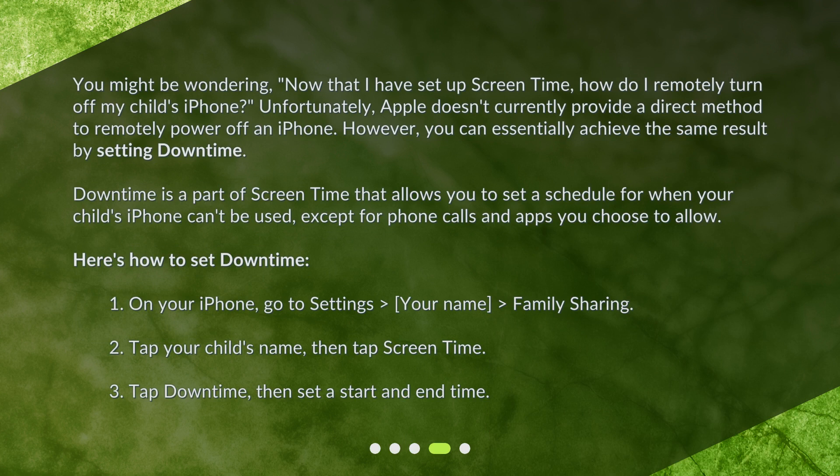You might be wondering: now that I have set up Screen Time, how do I remotely turn off my child's iPhone? Unfortunately, Apple doesn't currently provide a direct method to remotely power off an iPhone. However, you can essentially achieve the same result by setting Downtime. Downtime is a part of Screen Time that allows you to set a schedule for when your child's iPhone can't be used, except for phone calls and apps you choose to allow.